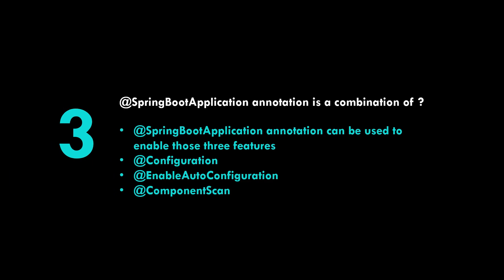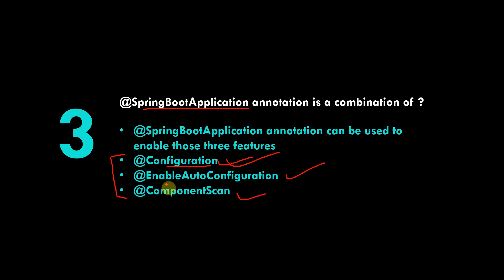The @SpringBootApplication annotation is a combination of three annotations: @Configuration, @EnableAutoConfiguration, and @ComponentScan. @Configuration is used with @Bean annotations wherever you are declaring beans or objects — you use it on top of the class and the method. @EnableAutoConfiguration enables your Spring Boot application to auto-configure itself.